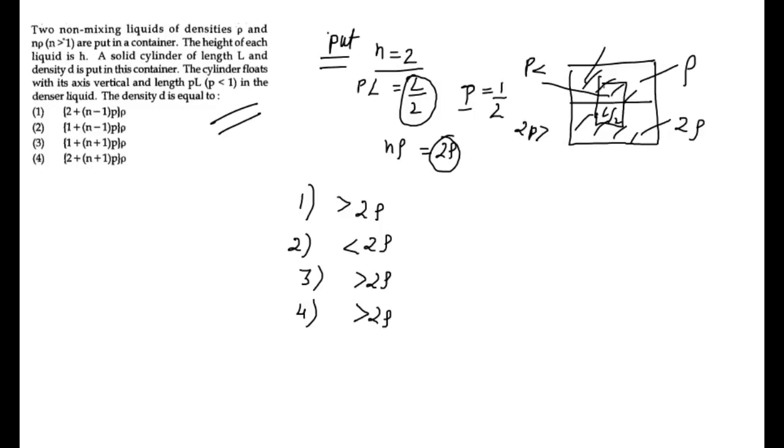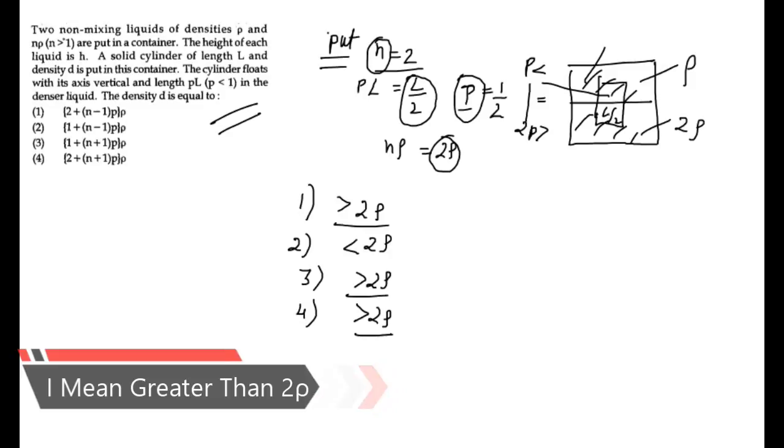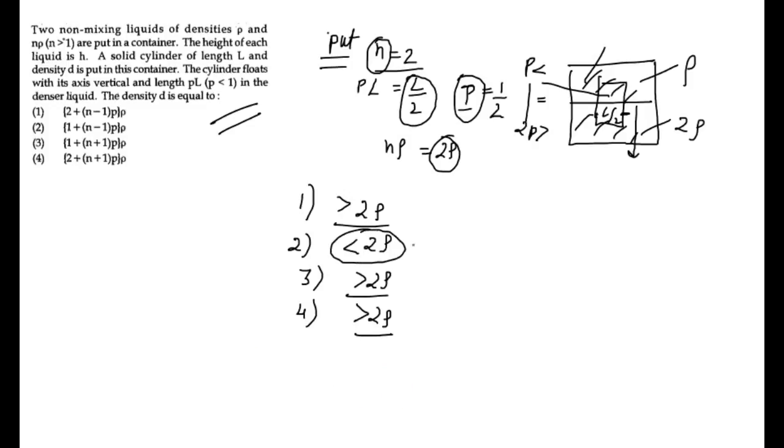Now if you notice the diagram, it is floating in between. Hence we can say that the density is in between rho and 2 rho. So if we take all the options one by one, the value of n as 2 and p's value we put as 1 by 2, then these three options are giving 2 rho density. That means your block should not float in the second medium, it should sink. But it is floating. Only this is an option after putting the value that is giving less than 2 rho density. That means this will not sink and it will half float. So based on just analysis, how easily we could get the answer in such a quick time.